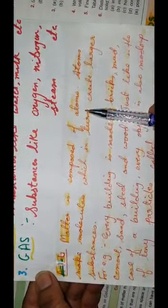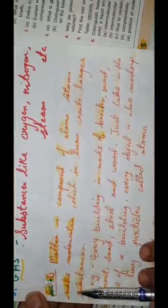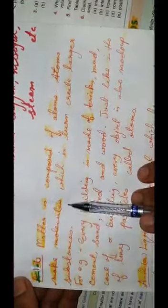Question 2, B part only: What is matter comprised of? Explain briefly. Answer: Matter is composed of atoms. Atoms make molecules, which in turn create larger substances.